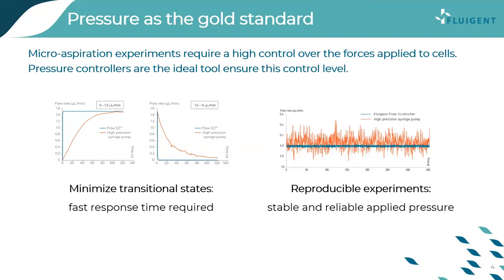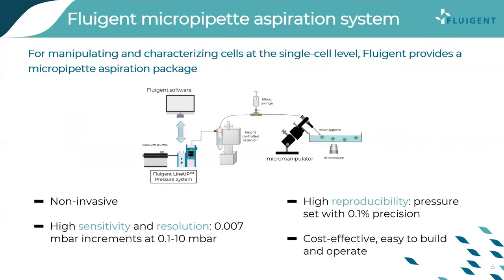Fluigent pressure controllers are particularly suited for these applications, as they allow applying forces ranging from tens of piconewtons to one nanonewton in micropipette aspiration. To provide the ideal solution for microaspiration experiments, we offer the micropipette aspiration package. It allows manipulation and characterization of cells at the single cell level and is a non-invasive technique to evaluate the biomechanical properties of single cells or tissue, and also to evaluate the response to mechanical stimuli.